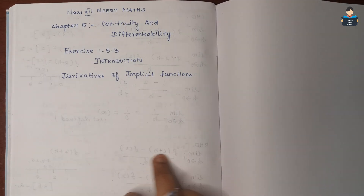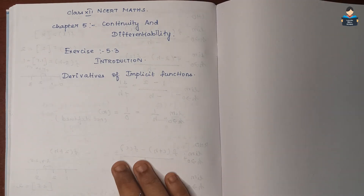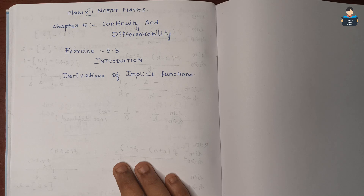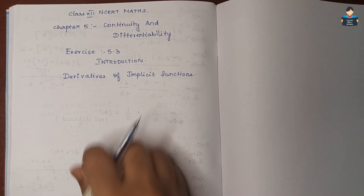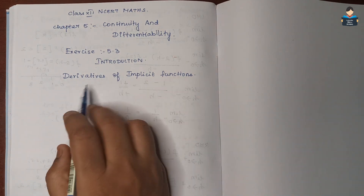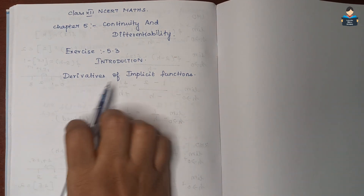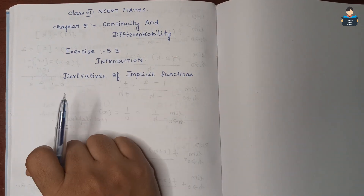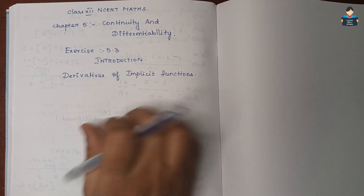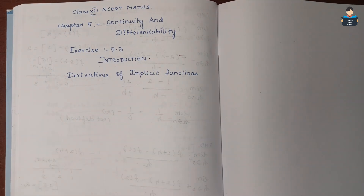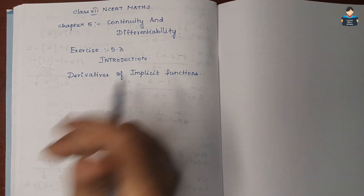Hello everyone, welcome to the channel. In this video, Class 12 NCERT Math Chapter 5 Continuity and Differentiability, Exercise 5.3 introduction. We will discuss the topic of derivatives of implicit functions.